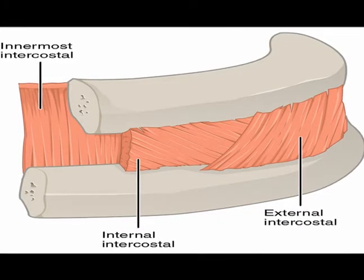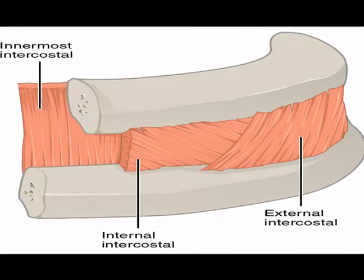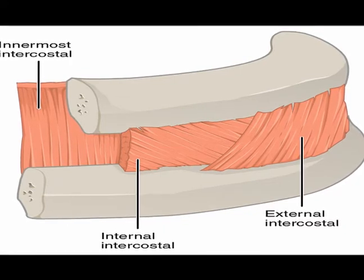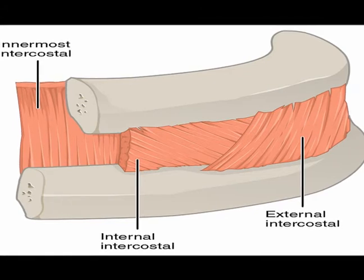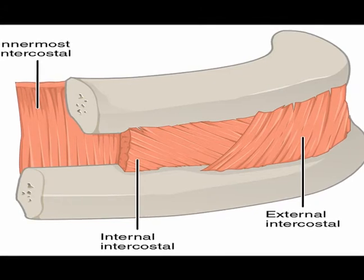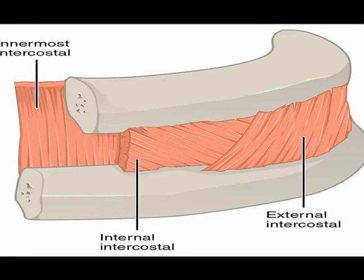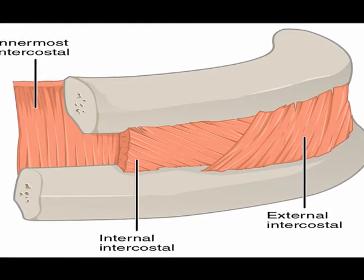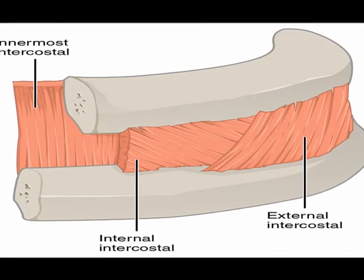The internal intercostal muscles aid in forced expiration. They originate on ribs number two through twelve and insert on ribs number one through eleven. Their action is to decrease the transverse dimensions of the ribcage through rib depression and inward bending.